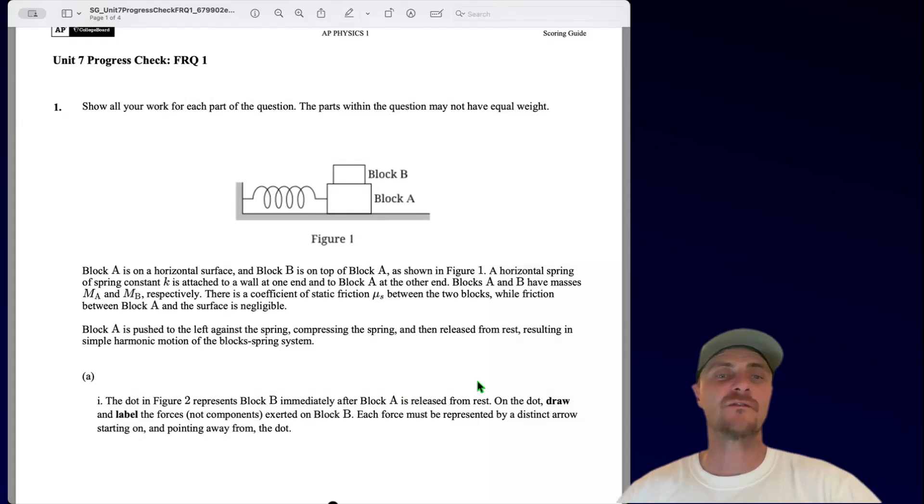Block A is on a horizontal surface, and block B is on top of block A, as shown in figure 1. A horizontal spring of spring constant k is attached to a wall at one end and to block A at the other end. Blocks A and B have masses m_A and m_B, respectively. There is a coefficient of static friction μ_s between the two blocks, while friction between block A and the surface is negligible. Block A is pushed to the left against the spring, compressing the spring, and then released from rest, resulting in simple harmonic motion of the block spring system.